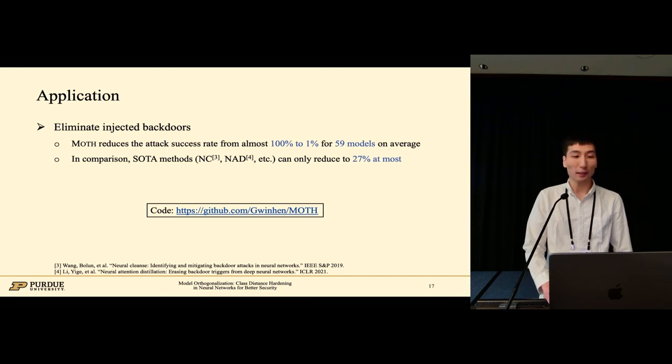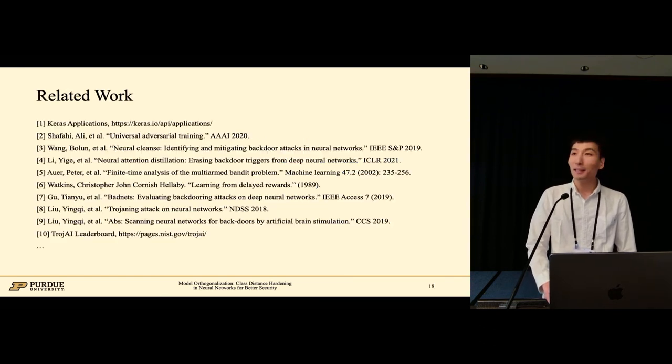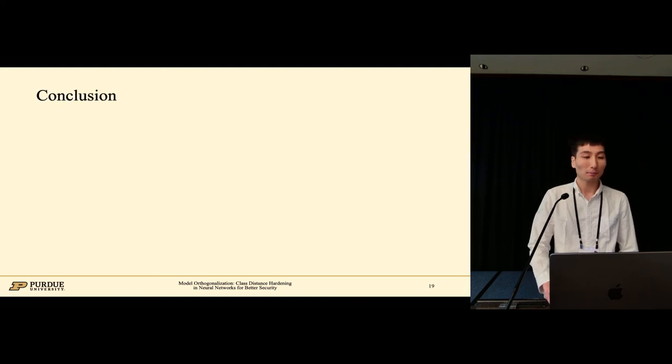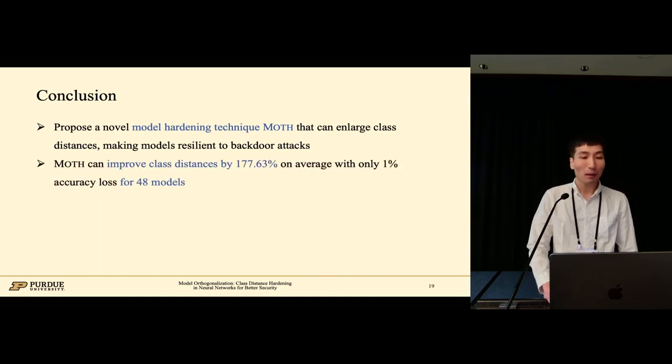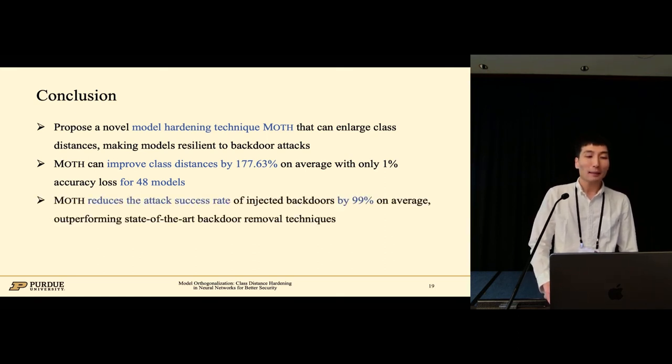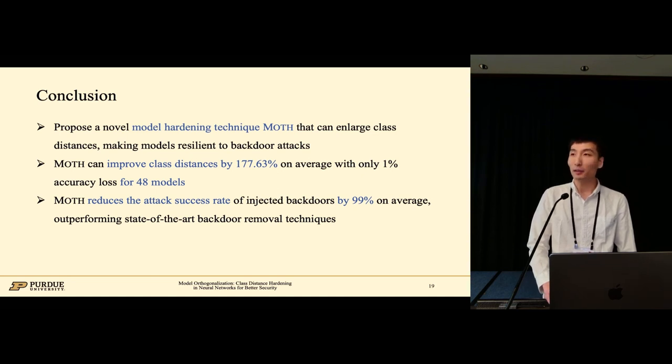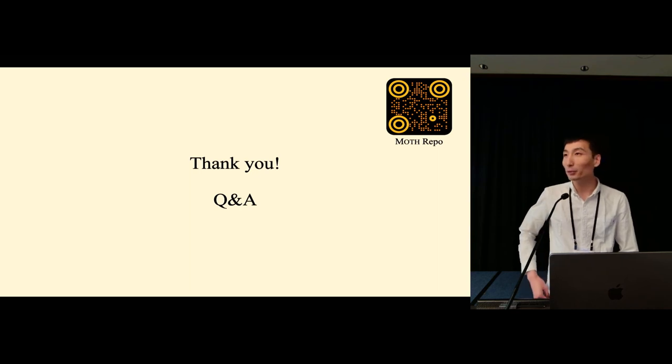Our implementation is available online. Here is a list of our related work. In conclusion, we propose a novel model hardening technique that can improve models' robustness against backdoor attacks. MAUS can greatly improve class distances by 177% on average with limited accuracy loss for 48 models. It also reduces the attack success rate of injected backdoors by 99%, outperforming state-of-the-art removal techniques. Thank you. I'm happy to take any questions.